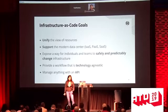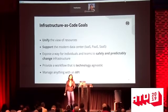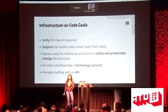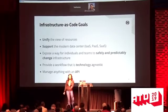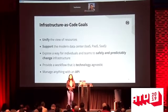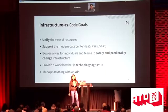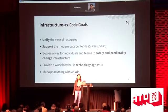Infrastructure as code provides a workflow that's technology agnostic. If I want to create something in my target infrastructure, I don't really need to be thinking about the underlying technology — I want to make composites of the resources I need. And I can manage anything with an API. There's a big caveat to that: not everything has a good API. We'll talk about that.